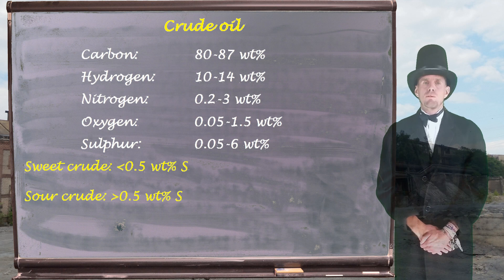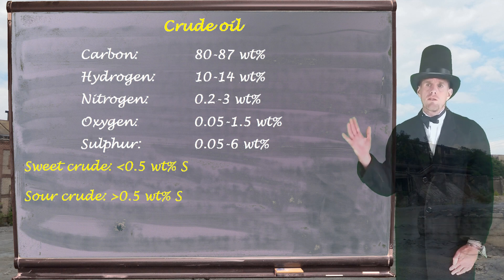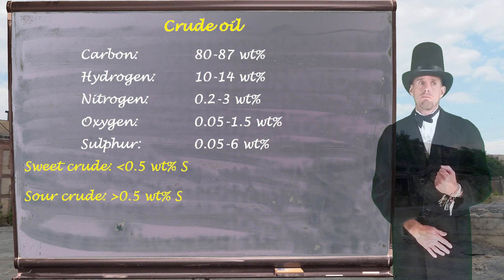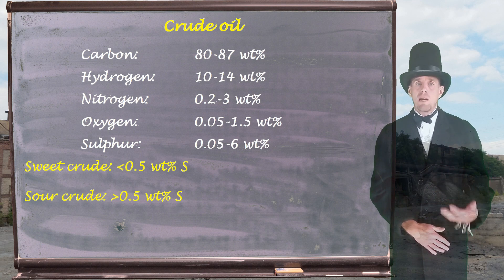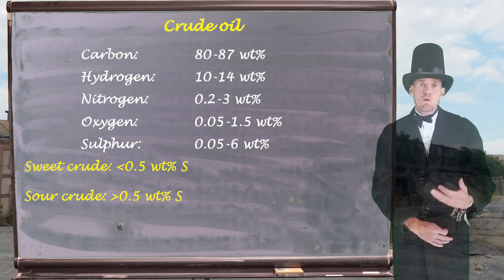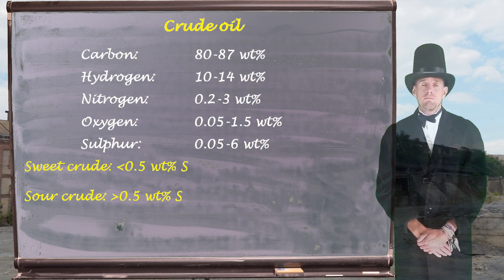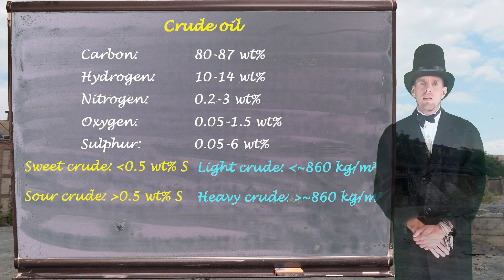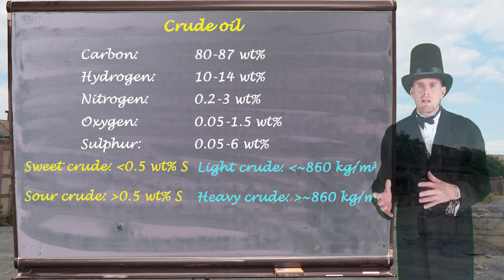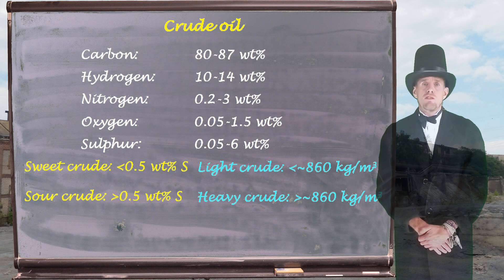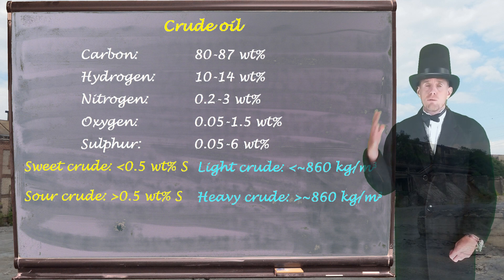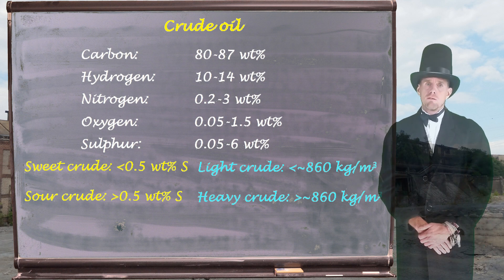When crude oil is classified, you will hear people talking about sweet crude and sour crude, and all this is with respect to the amount of sulfur in an oil. If there is less than half of a weight percent of sulfur, it is termed sweet. If there's more than half a weight percent, it is termed sour — sour because sulfur products are acidic, and historically we associate sourness with an acidic nature. We'll also hear about oils being classified as light or heavy, which is a density classification. If we have a density of less than roughly 860 kilos per cubic meter, we have a light crude oil; above that, it is a heavy crude oil.